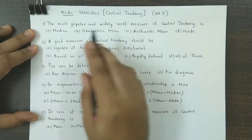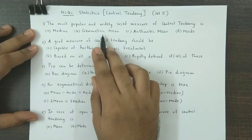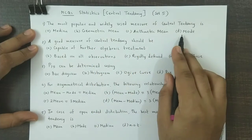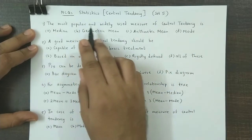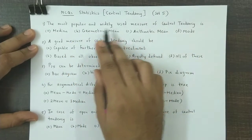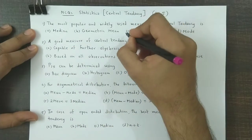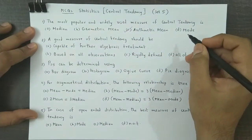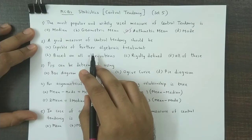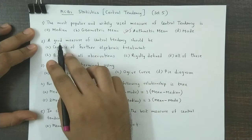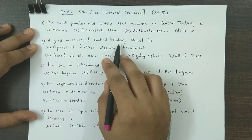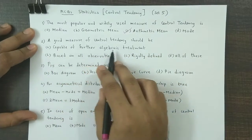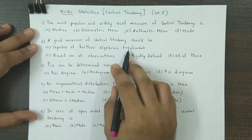Question 1: The most popular and widely used measure of central tendency. The options are median, geometric mean, arithmetic mean, and mode. The most popular and widely used amongst all these is the arithmetic mean.